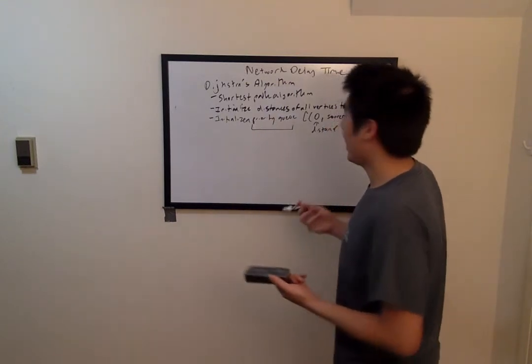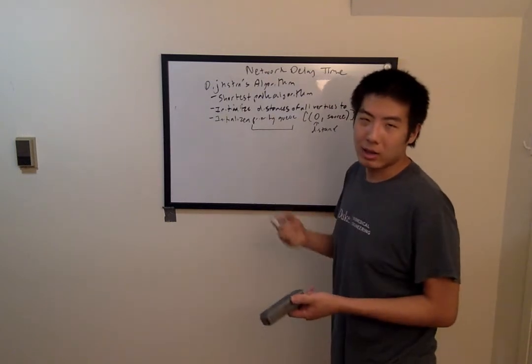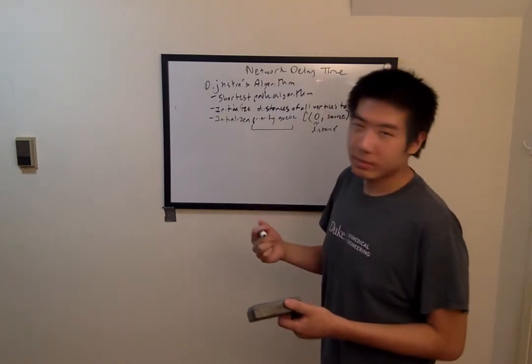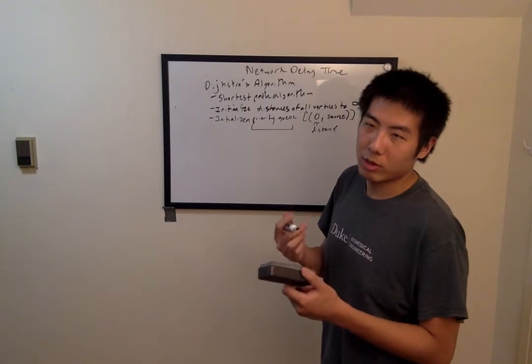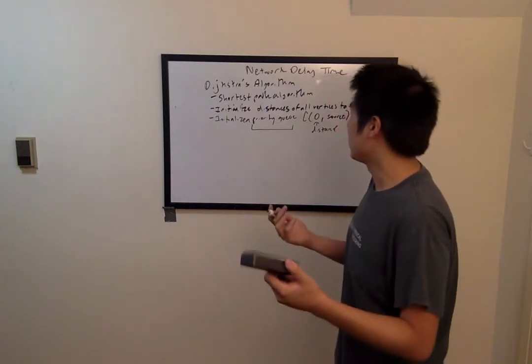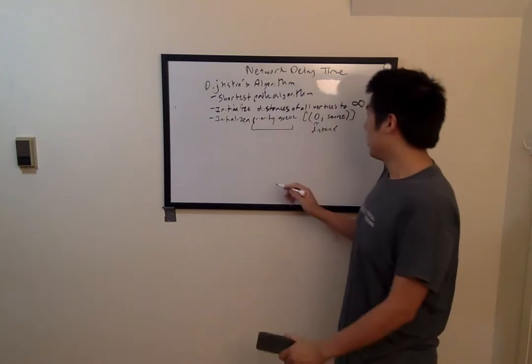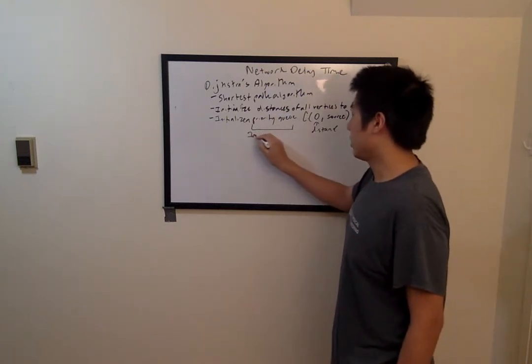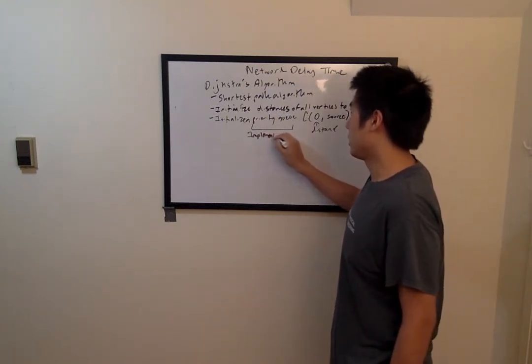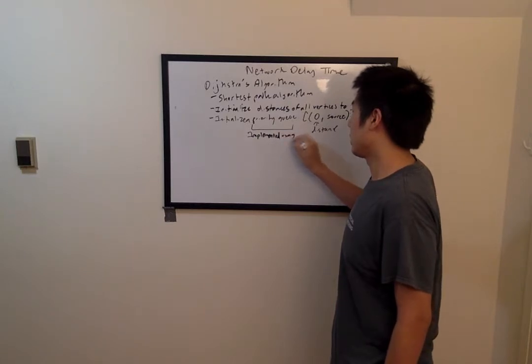And then once you pop that, you can use heap in order to bubble up the new top of the heap, in case you need to dequeue an object multiple times. So I'll just make a note here that this is implemented using heaps in Python.